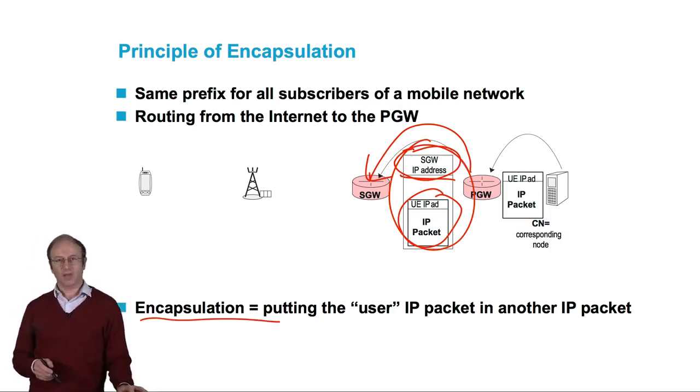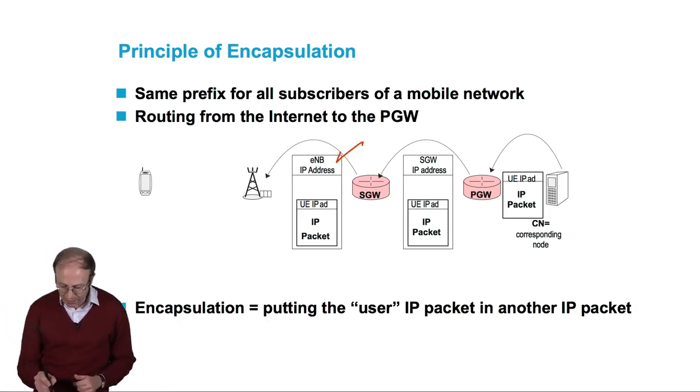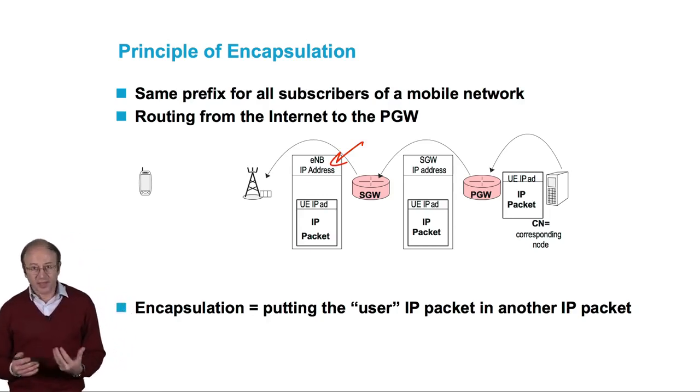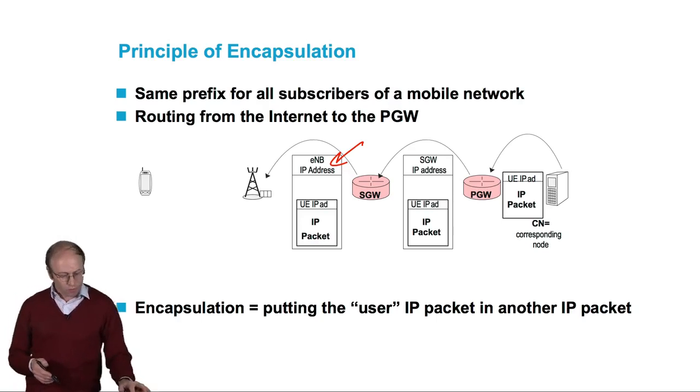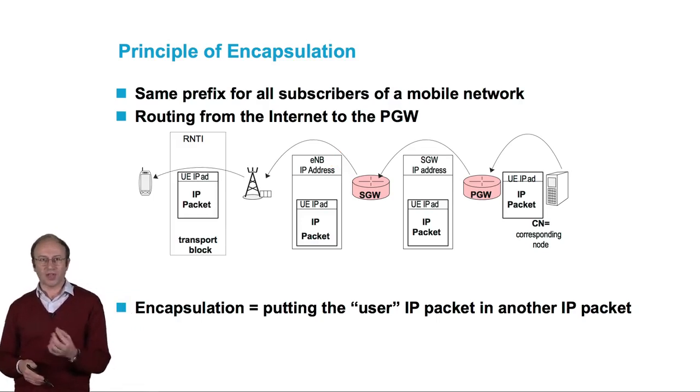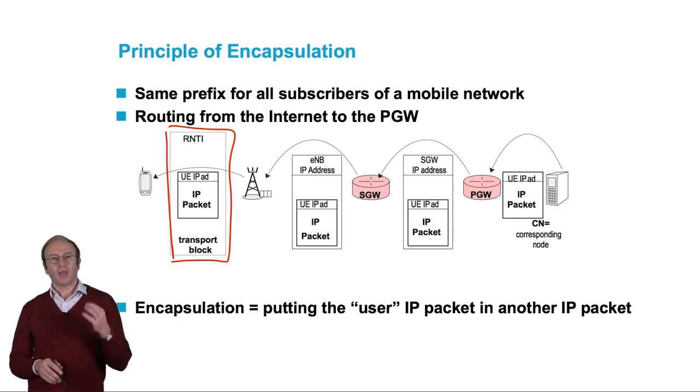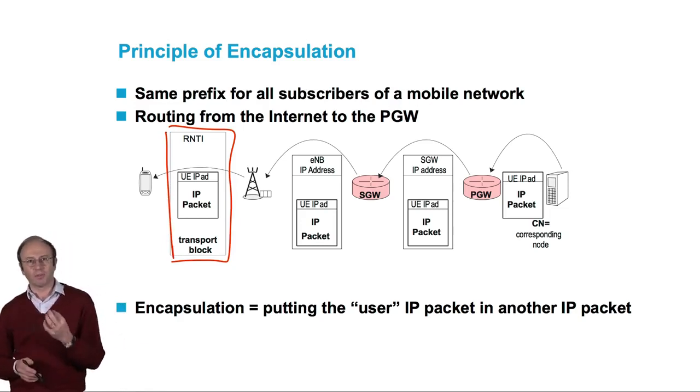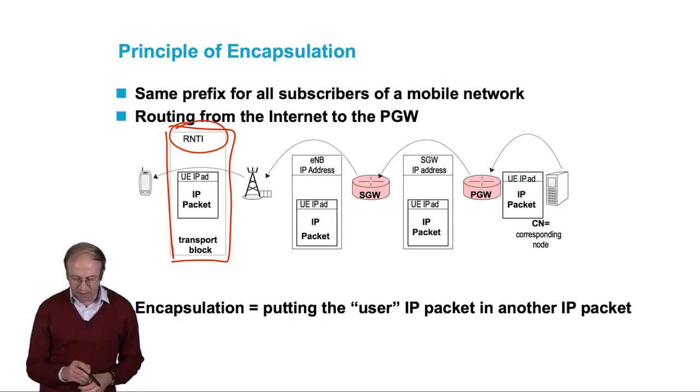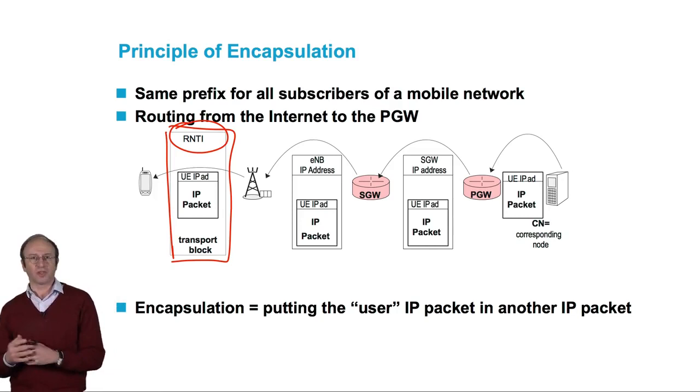The same encapsulation principle is used between the serving gateway and the eNodeB. Here, we will have the IP address of the eNodeB as its destination address. On the radio interface, as we saw in week 3, the user's IP packet is put in a transport block. This transport block is sent to a specific RNTI, or radio network temporary identifier, that corresponds to the mobile terminal.